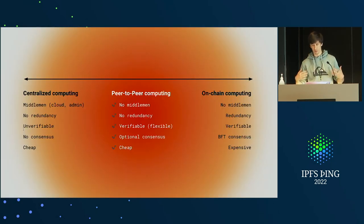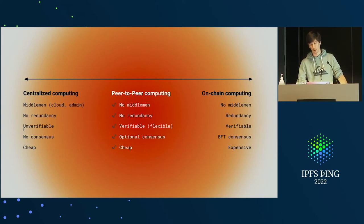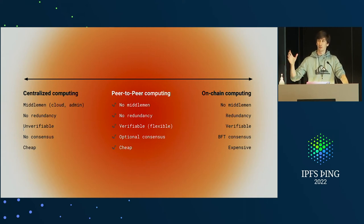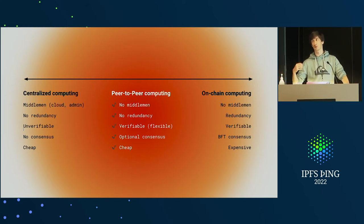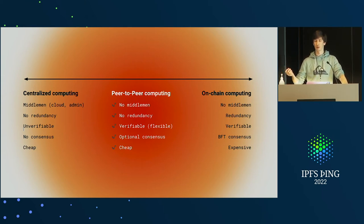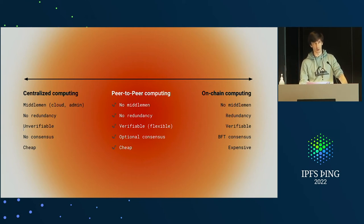We are trying to solve this issue at the highest level. We think there should be a network that allows you to deploy any computation, run it, and if you need verification for the computation, you should be able to do it; if you don't need it, you should be able to avoid it. So it's a hybrid trust model for computation — much more relaxed than the constraints you have on-chain.